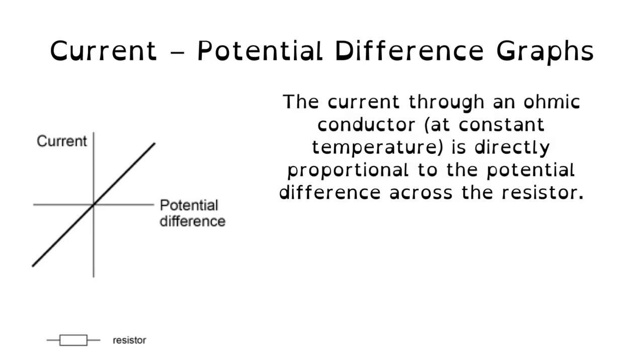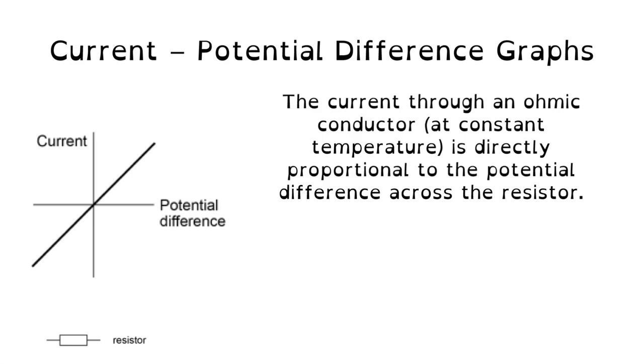So some words to go with this then would be the current through an ohmic conductor, and that's one at a constant temperature, is directly proportional to the potential difference across the resistor. So an ohmic conductor obeys Ohm's law. The word directly proportional refers to the straight line through the origin. If it's just proportional, it will be a straight line, but if it's directly proportional, it means it goes through the origin. Because the gradient doesn't change, that means the resistance remains constant.